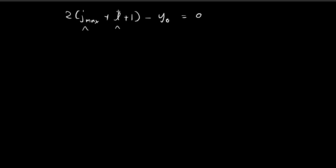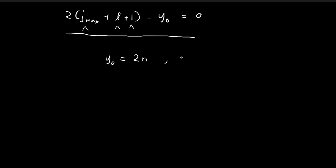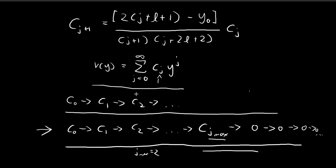l came from the spherical harmonics and is also an integer, and one is obviously an integer, so this entire expression is an integer multiplied by two — an even number. For this whole thing to equal zero, y₀ itself must be an even integer. We characterize this as y₀ = 2n, where n = 1, 2, 3, 4, and so on.